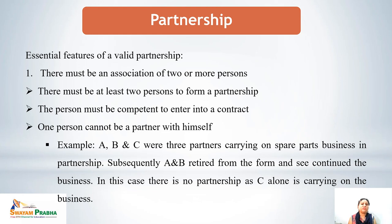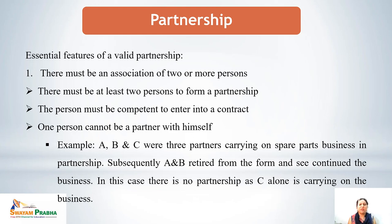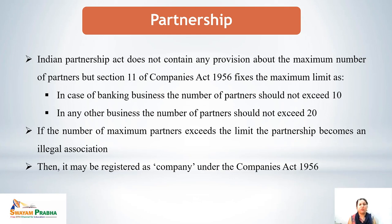What are the essential features of a valid partnership? First, there must be an association of two or more persons. One person cannot be a partner of himself, so at least two persons are required. Those persons should be competent to enter into a contract. For example, A, B and C were three partners carrying on a spare parts business. Subsequently A and B retired, and C continued — in this case there is no partnership as C alone cannot carry on the business.